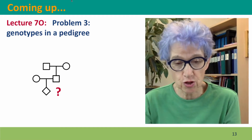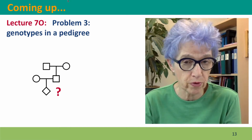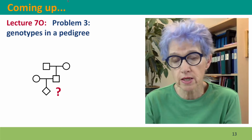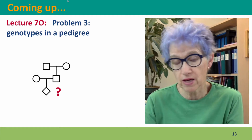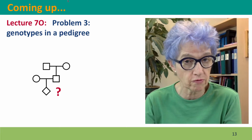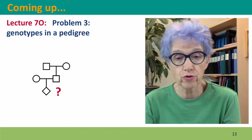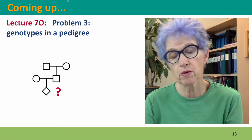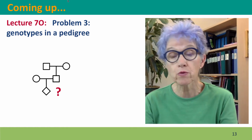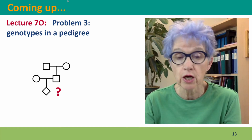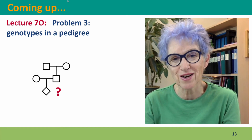Coming up next is the third of our full generation problems. In this one, we're going to consider quite a different situation. Instead of having a large population of offspring, we'll consider a simple family with two parents and a child, and then we'll think about a couple of grandparents as well. We'll use pedigree drawing to guide our thinking this time. I hope to see you there. Thanks.